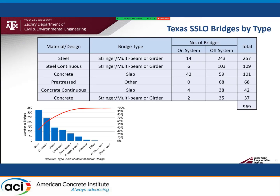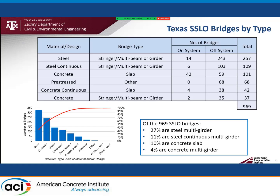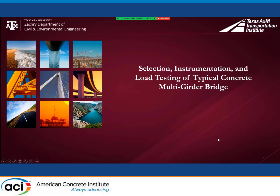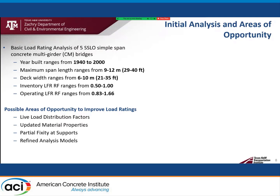The 969 SSLO bridges in Texas were further classified based on the type of material and construction. The project investigated the load rating procedure for these 4 bridge types. This paper highlights the findings for concrete multi-girder bridges. We move on to the selection, instrumentation, and load testing of a typical concrete multi-girder bridge.